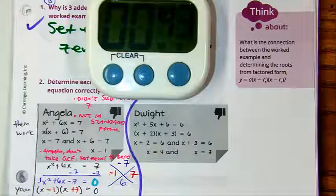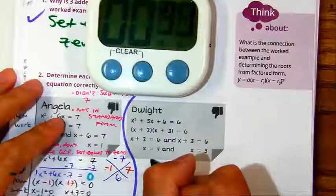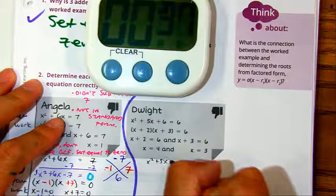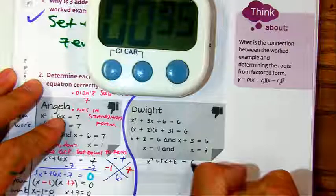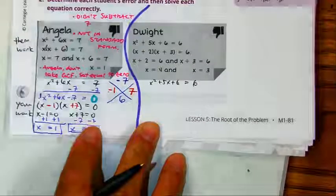Angie! Alright, Angie. X squared plus 5x plus 6 equals 6. Angie, what's the first thing you did over here?